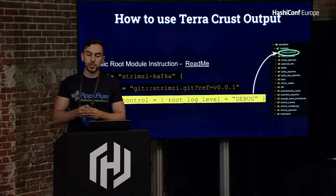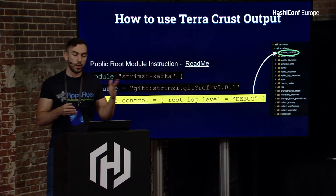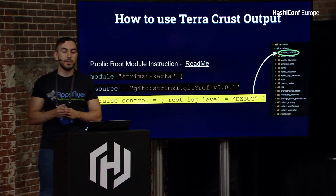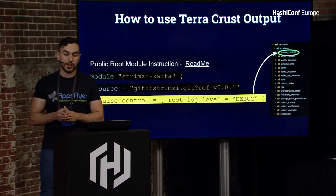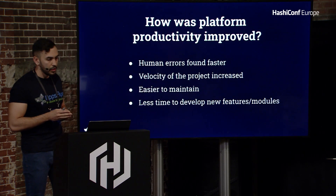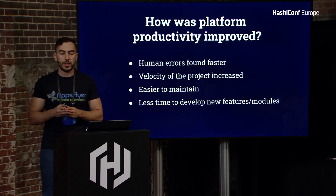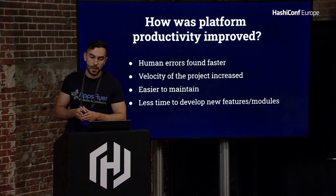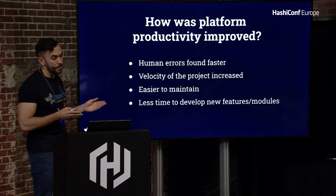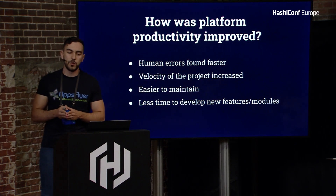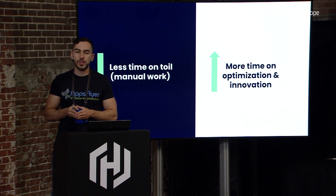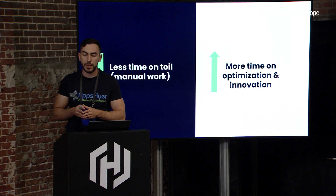Thanks to the hierarchy, the change of the CruiseControl logs propagates directly to the CruiseControl module level. This module includes around 70 modules and has more than 170 variables in total — please look at how easy it is to use and how everything is configurable. Thanks to TerraCrust, exposing only the optional variables, we can quickly determine if a variable should be shown or not. Because there are fewer HCL lines to maintain, the velocity of the project increased and it became easier to maintain. TerraCrust enables us to develop new features and modules much more quickly, since we don't have to reinvent the interface every time. Bottom line: using TerraCrust, we spend less time on manual work and more time on optimizing the development process.